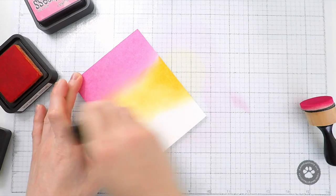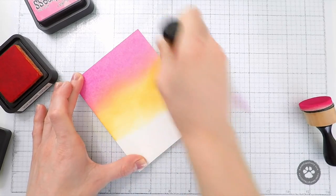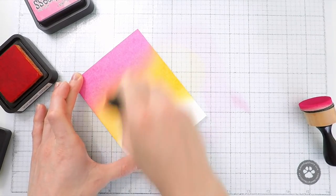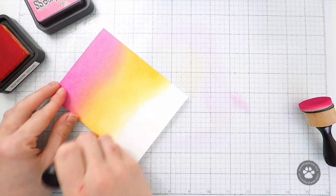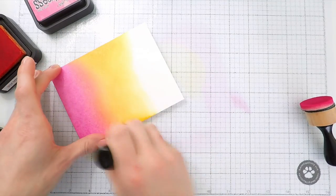As I'm blending the ink colors onto the paper, I'm making sure to overlap them and really get a nice blend between the two because this is going to help give you a really nice transition of color.